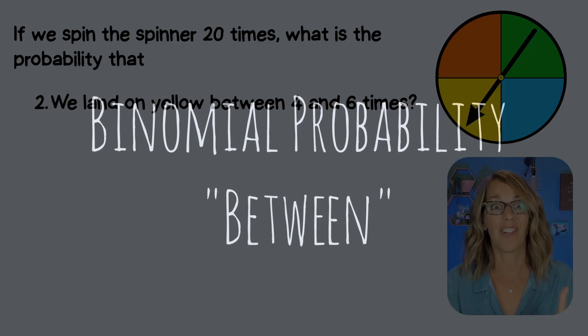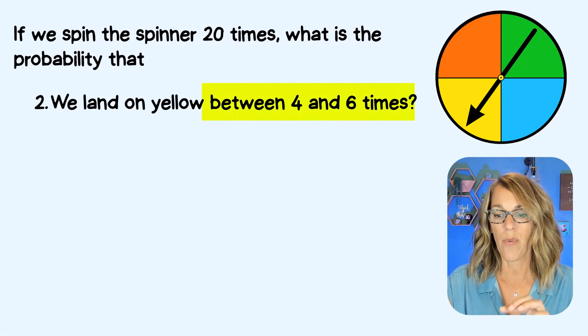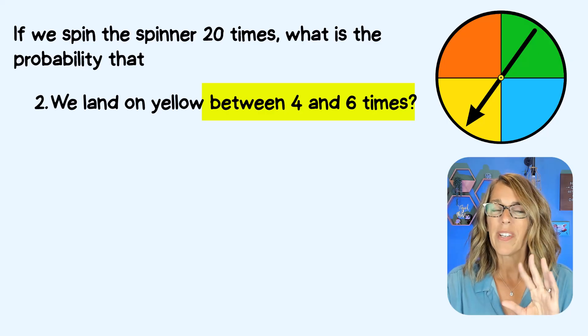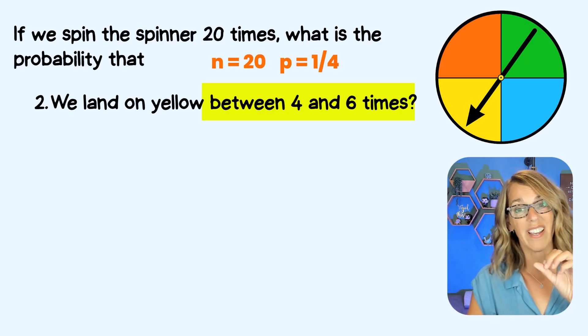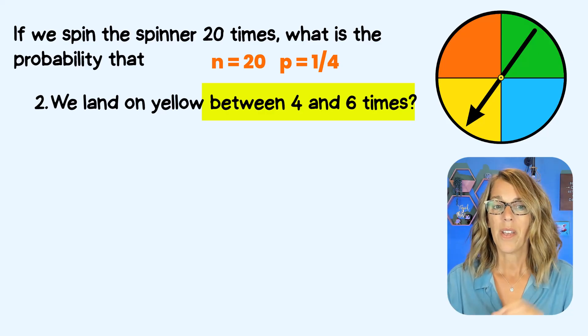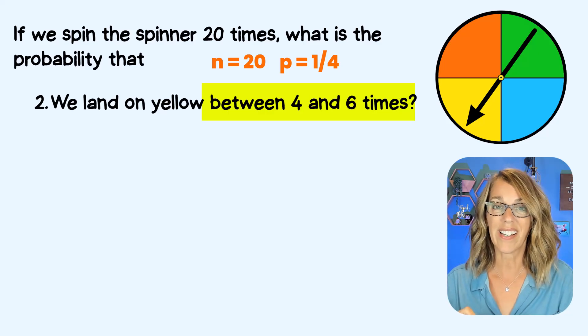Now this is going to bring up some additional skills for you. We want to land on yellow between four and six times. Now we still have the same number of trials and the same probability of getting a yellow, which is one out of four. But this time we want the probability between four and six.